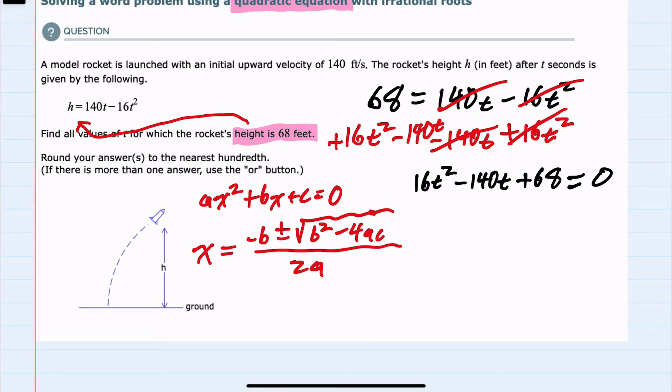And while I can apply the quadratic formula from here, I also notice that each one of these terms on the left hand side is divisible by four. So to use slightly smaller numbers, I can divide every term by four on both sides and we would now have 4t squared minus 35t plus 17 equals zero.